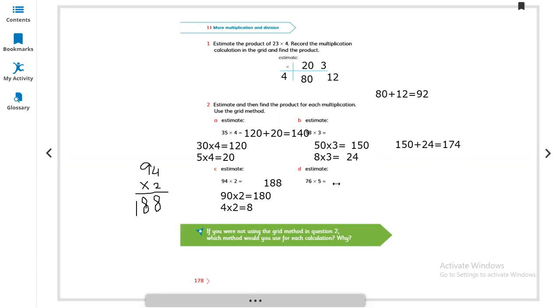76 multiplied by 5. 70 multiplied by 5 and 6 multiplied by 5. So 5 multiplied by 7 is 35, write it and put 0. And 5 multiplied by 6 is 30. So 350 plus 30 equals what? 380.